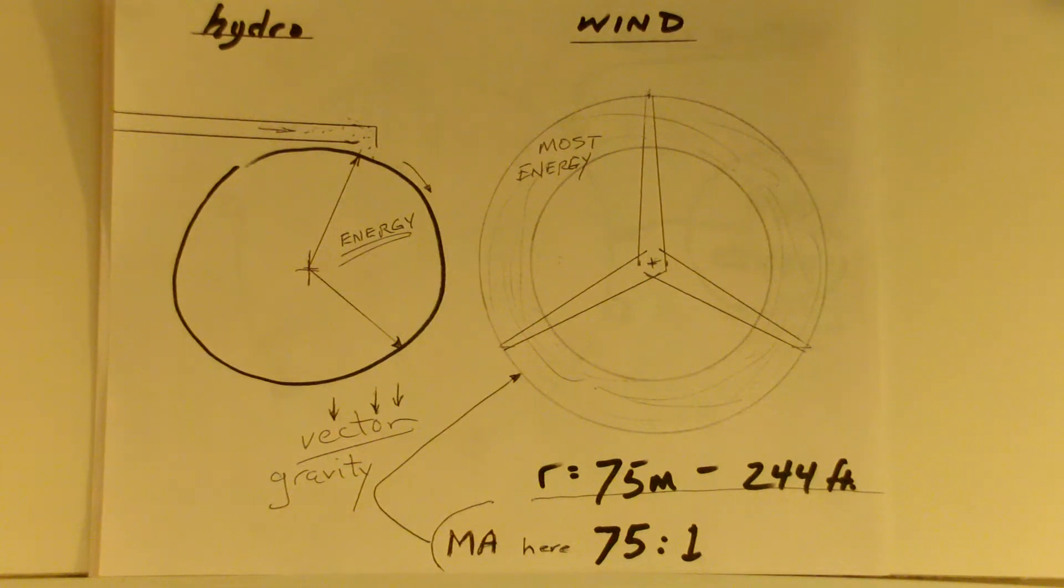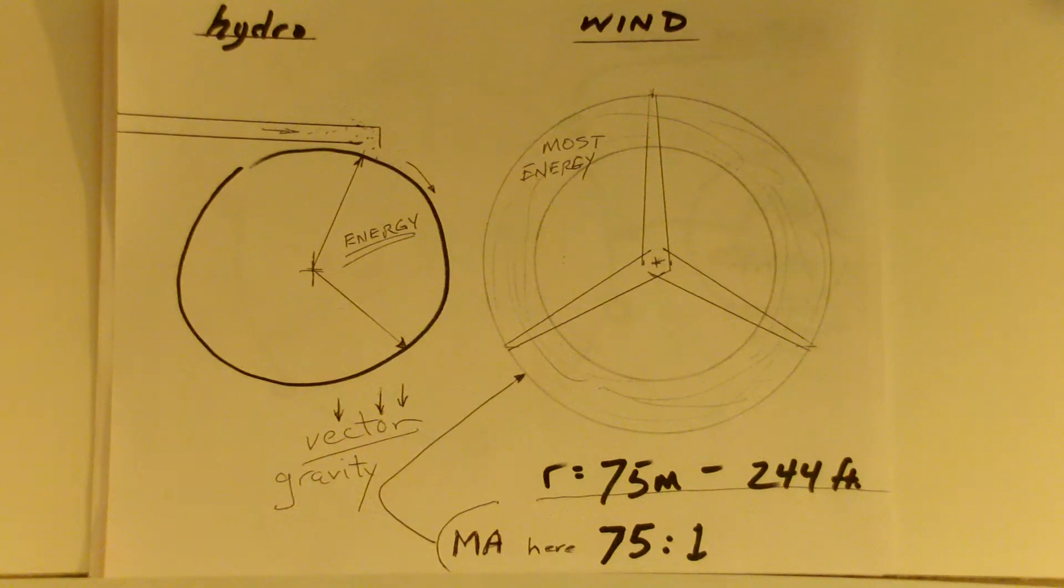In the age of utility scale wind turbines, this is a mature, understood technology and the rotors just keep getting bigger because that's where the power is. By today's standards, a 75 meter radius is small, but it's large enough to give an inherent mechanical advantage in these turning levers of 75 to 1.